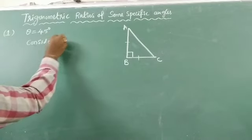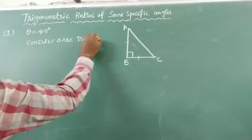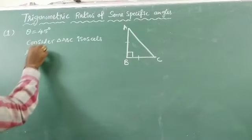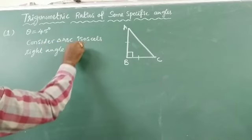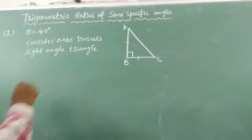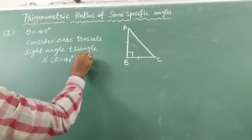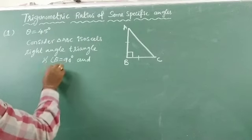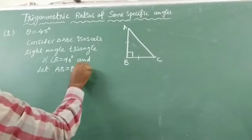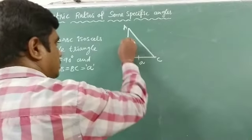Consider triangle ABC, an isosceles right angle triangle, where angle B equals 90 degrees. Let AB side and BC side both be equal — say, both are equal to a. So this length is a and this length is also a.